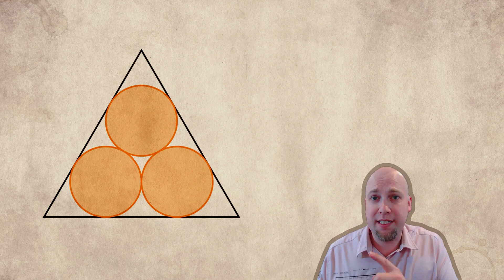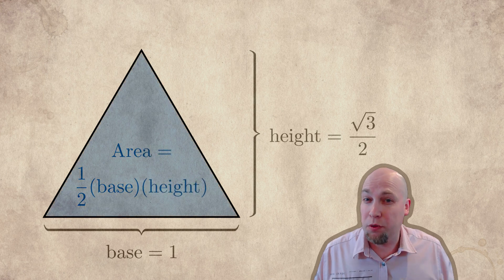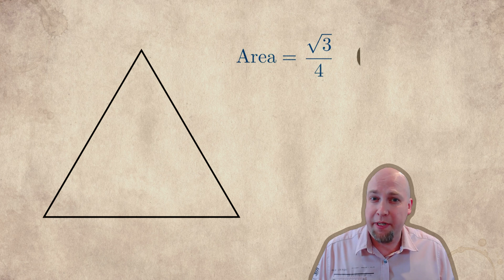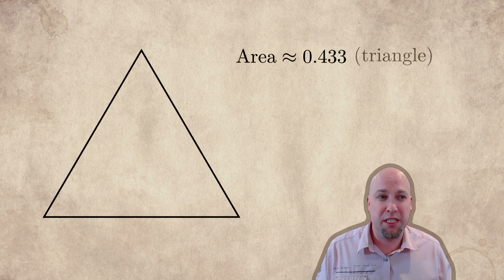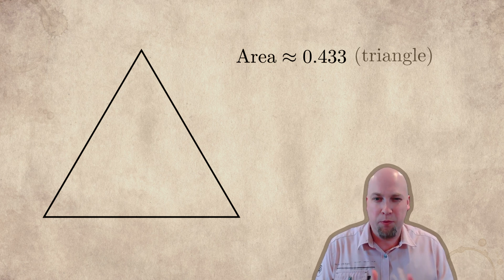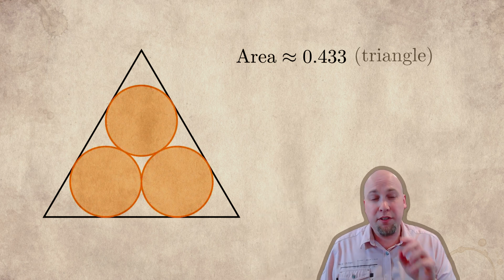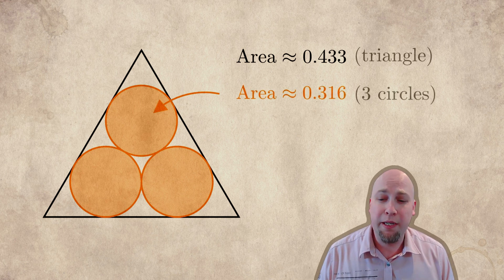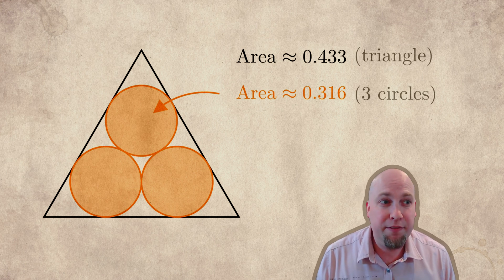So let's check how well this configuration here does. The area of the triangle is exactly root 3 over 4, or approximately 0.433. I'm going to work with decimals from here, approximations, just because we're going to be comparing the sizes of a whole bunch of different numbers. They all have exact forms, but they're kind of ugly and hard to compare without going to decimal approximations. So the area of the triangle is about 0.433, the area of those three equally sized circles all taken together is about 0.316, which is about 72.9% of the area of the triangle.